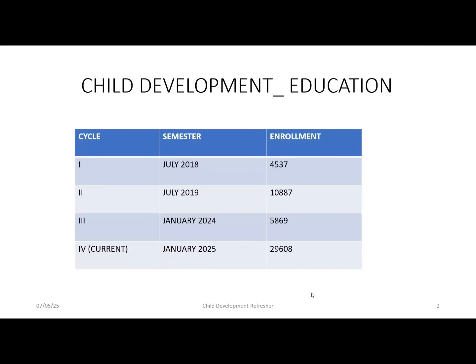The Child Development Education course was initially started on the Swayam MOOCs platform in the July 2018 semester, with 4,537 learners enrolled. The second cycle started in July 2019 with 10,887 student enrollment. The third semester occurred in January 2024 with 5,869 enrollment, and currently we are in the fourth cycle of January 2025 with a record highest enrollment of 29,608 learners.